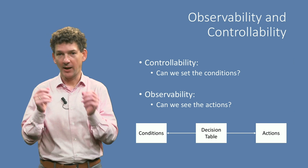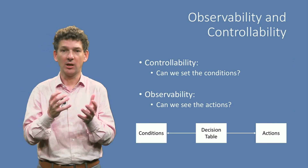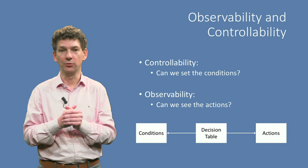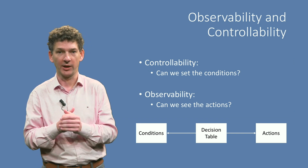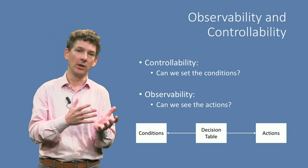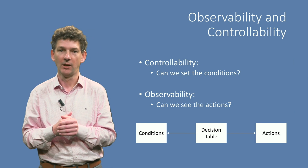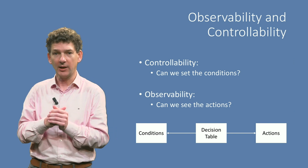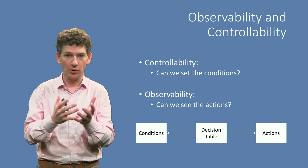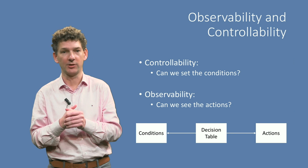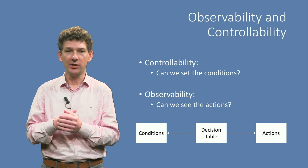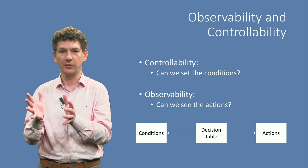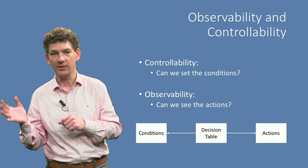Controllability and observability issues are very common in testing in general, and one way to counter them is using mock objects, which we have discussed in one of the previous lectures. Thus, let's consider a generic implementation of a decision table, shown here as a simple UML class diagram. It distinguishes three roles for the classes involved: the decision table itself in the middle, conditions, and actions.